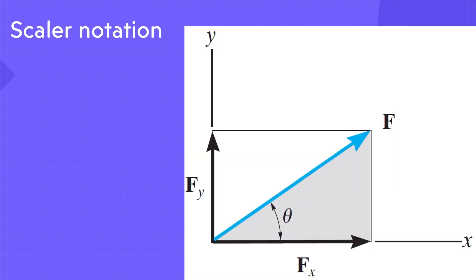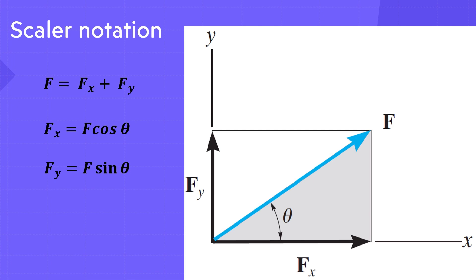The rectangular components of force F shown in this figure are found using the parallelogram law, so that F equals Fx plus Fy. Because these components form a right triangle, they can be determined from Fx equals F cosine θ and Fy equals F sine θ.